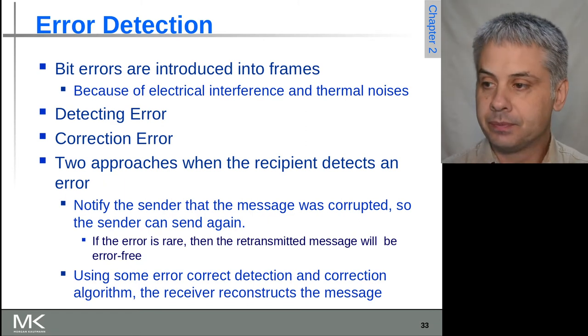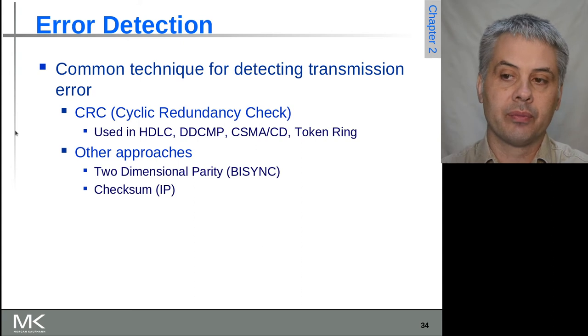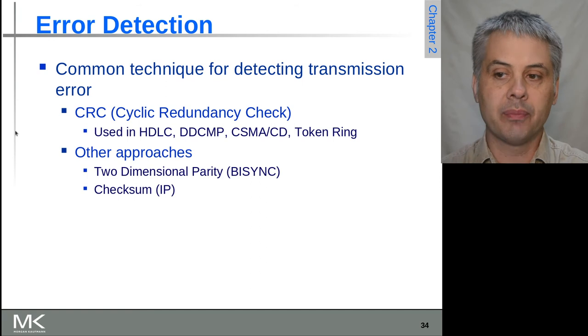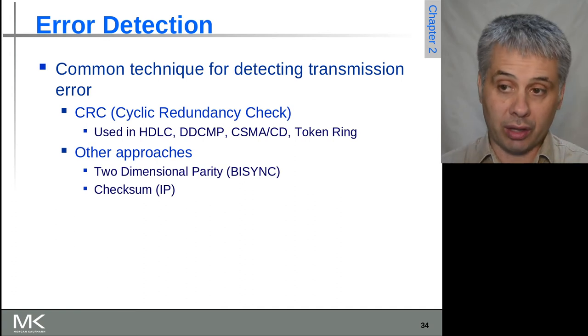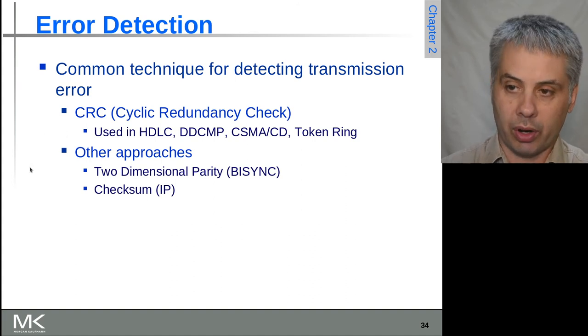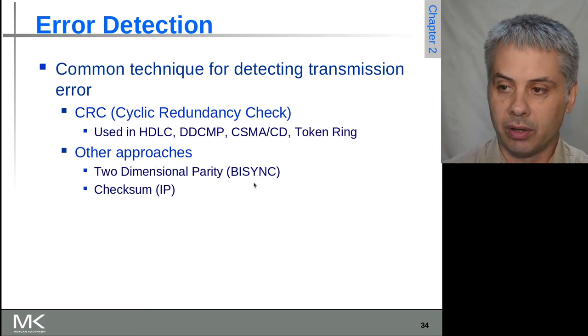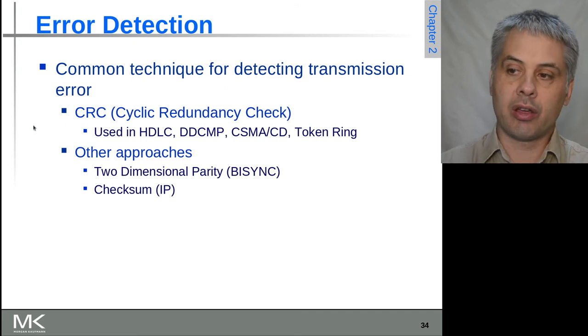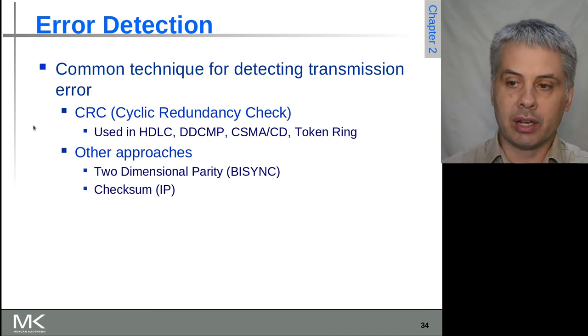The detection part is generally speaking relatively easy. You have some kind of checksum—there's a very narrow definition of checksum where you're literally adding up bits or bytes in a data frame, such as what IP uses, or it could be some other more sophisticated methods. In the case of bisync, it uses a two-dimensional parity system, or cyclic redundancy codes used in a number of other protocols that are a little bit more resilient.